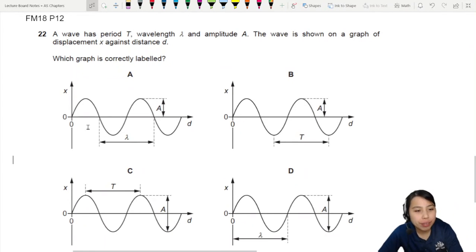Okay, here we have a bunch of graphs with different things and lots of labels. A wave has all these things: period, wavelength, and amplitude. The wave is shown on a graph of displacement against distance. Okay, that is very important.